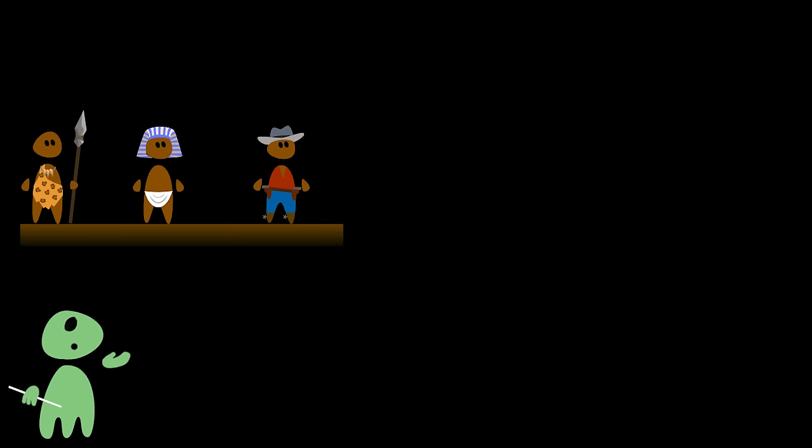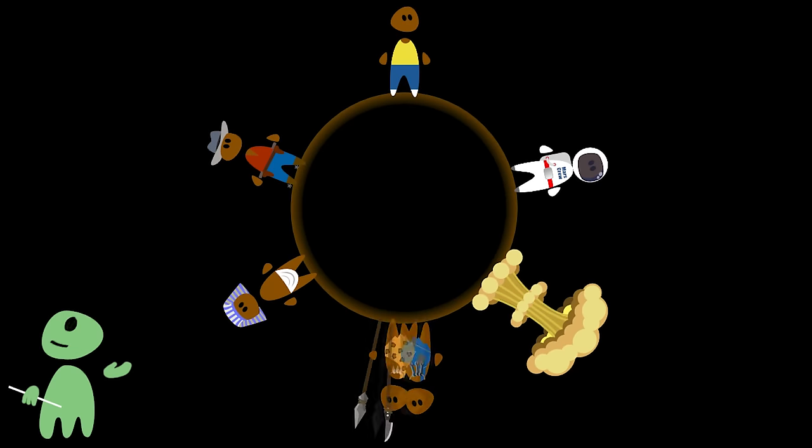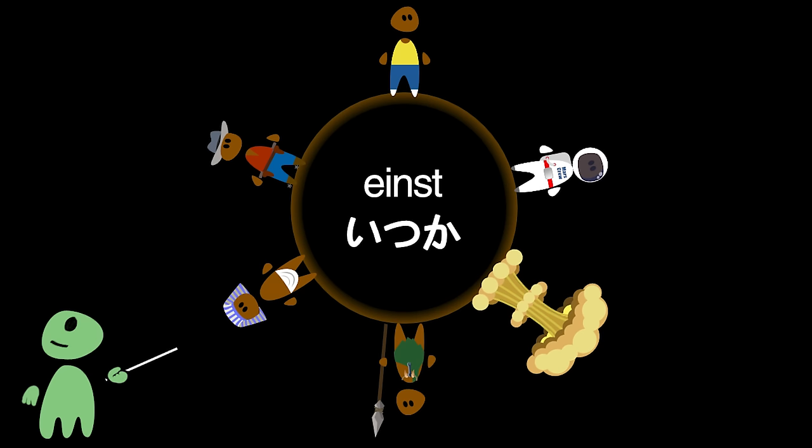I guess earthlings like to conflate the remote past and the remote future, because both are distant eras they know very little about, like faraway lands in the east and in the west. Many languages have even words that can indicate both the distant past and a distant future, like German Einst, Japanese Itsuka, or English once.